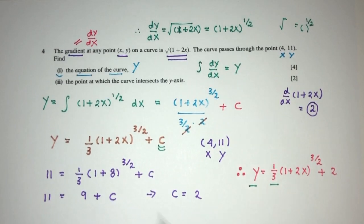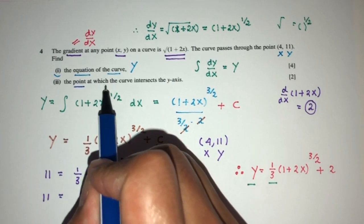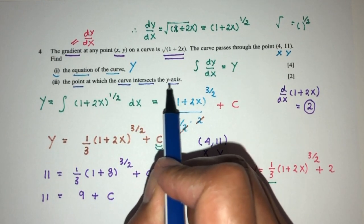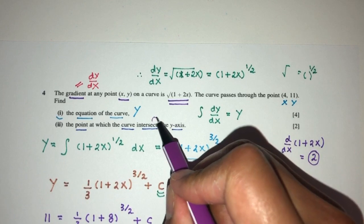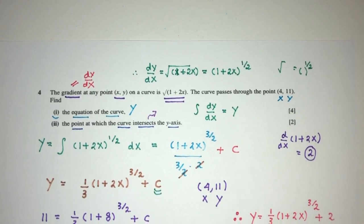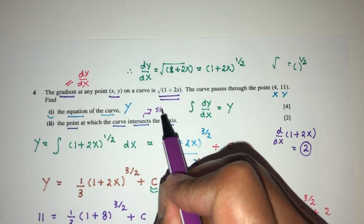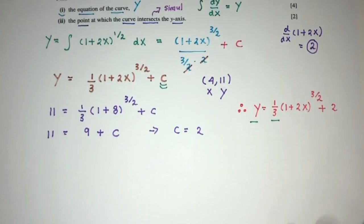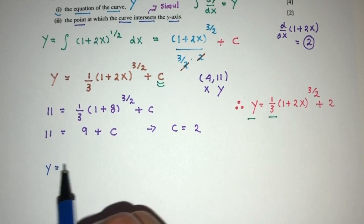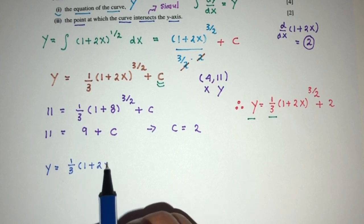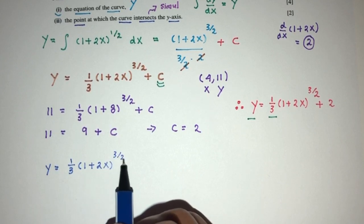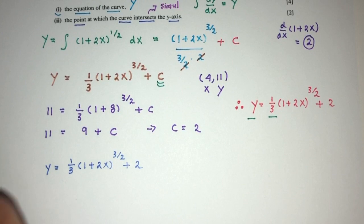Now for part 2, we have to find the point at which the curve intersects the y-axis. So pretty easy. Now again, we have a very good indication here. Whenever you see intersects, meets, cuts, or joins, this will lead to a simultaneous equation. So we have the equation of the curve, which is y equal to 1/3 times 1 plus 2x to the power 3/2 plus 2. That is my equation number 1.